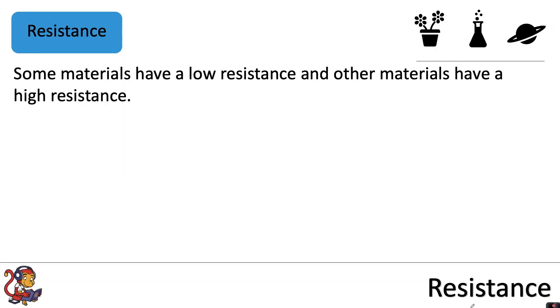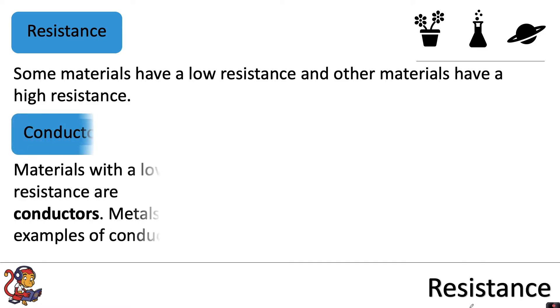Some materials have a low resistance and other materials have a high resistance. Materials with a low resistance are conductors. Metals are examples of conductors, so that's why metals are normally used in wires.